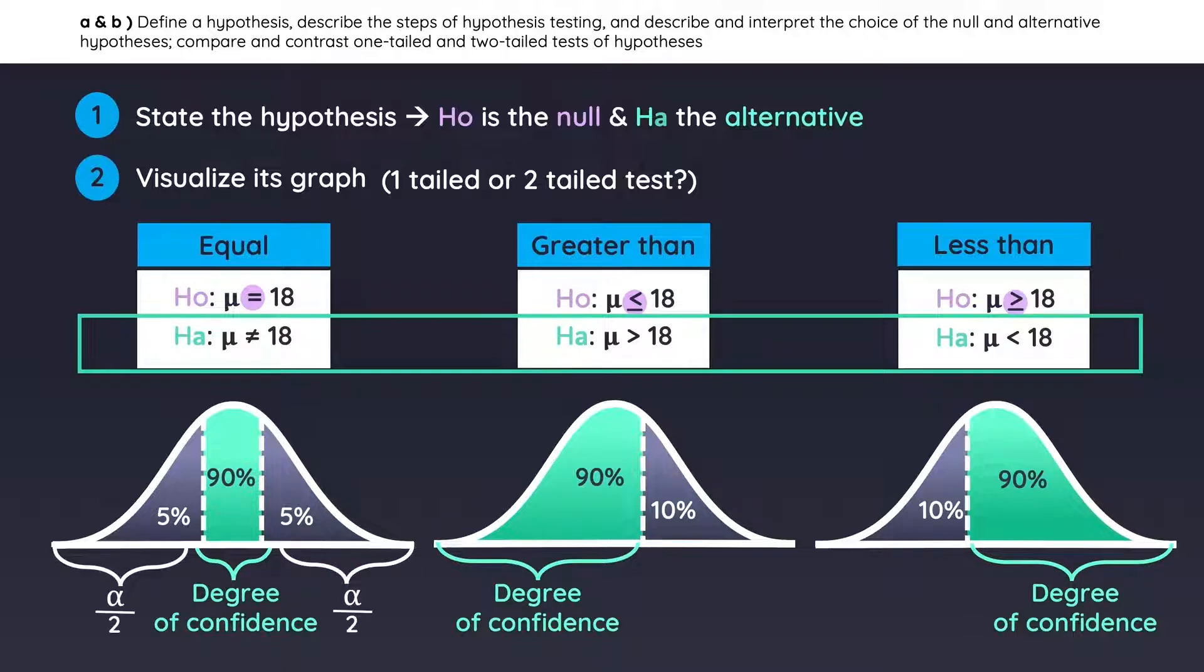Notice how for the two-tailed test, we split alpha evenly between the two tails. But for the one-tailed tests, the entire value of alpha is contained in a single tail.